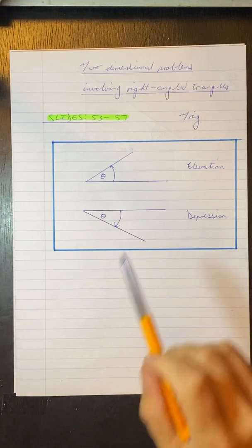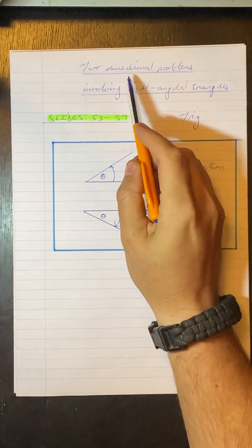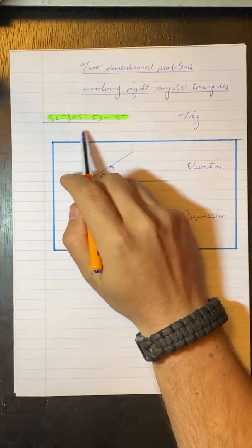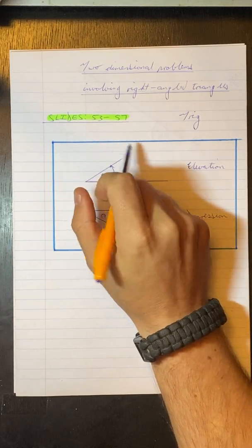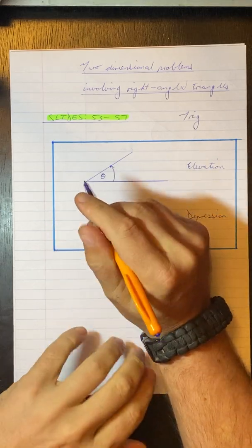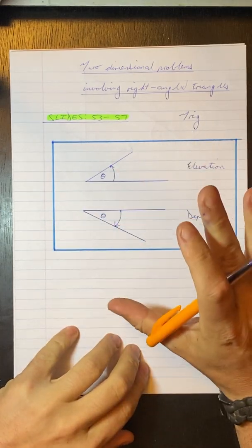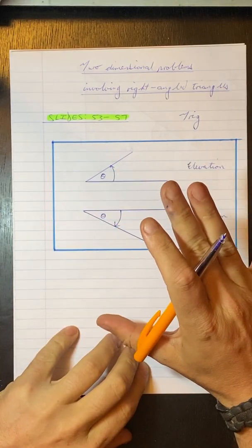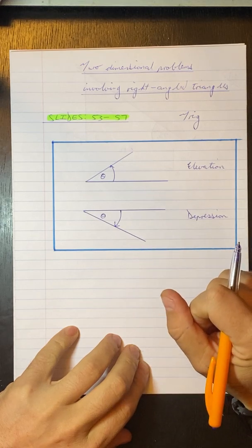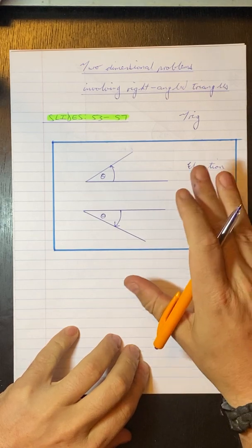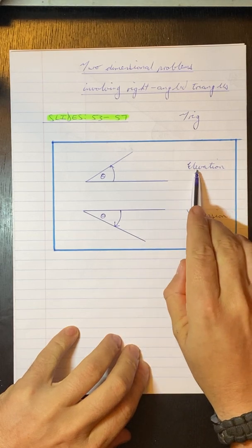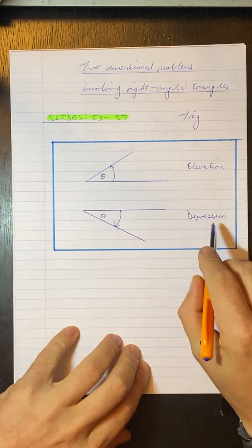Today we're going on to two-dimensional problems involving right-angled triangles, working from slides 53 to 57 from the trigonometry PowerPoint. These types of problems work with real-world problem-solving questions. So we just need to get some of these wordings down, which is angle of elevation and depression.